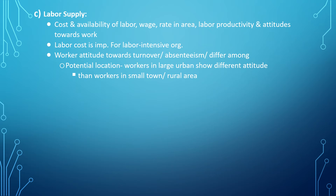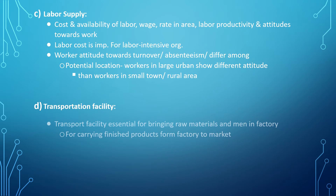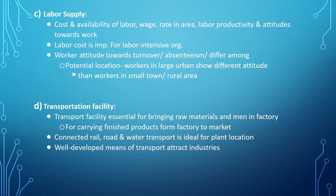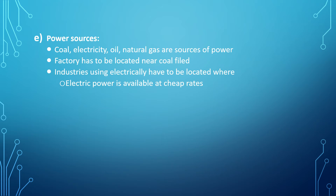Work attitude, turnover, and absenteeism differ among potential locations; workers in large urban areas have different attitudes than those in small towns or rural areas. Transportation facilities facilitate bringing raw materials and workers to the factory and carrying finished products to the market. Rail, road, and water transportation are ideal for plant location. Power sources such as coal, electricity, oil, and natural gas are important; factories must be located near their required power source, where electric power is available at cheap rates.